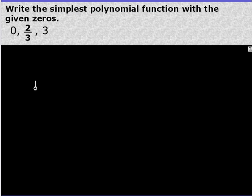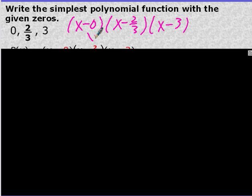Well, we're going to presume that we have, well, you can write it as x minus 0, but the reality is it's just going to be x. And then x minus 2 thirds and x minus 3. This simplifies to just being x. And now we're going to FOIL everything together.